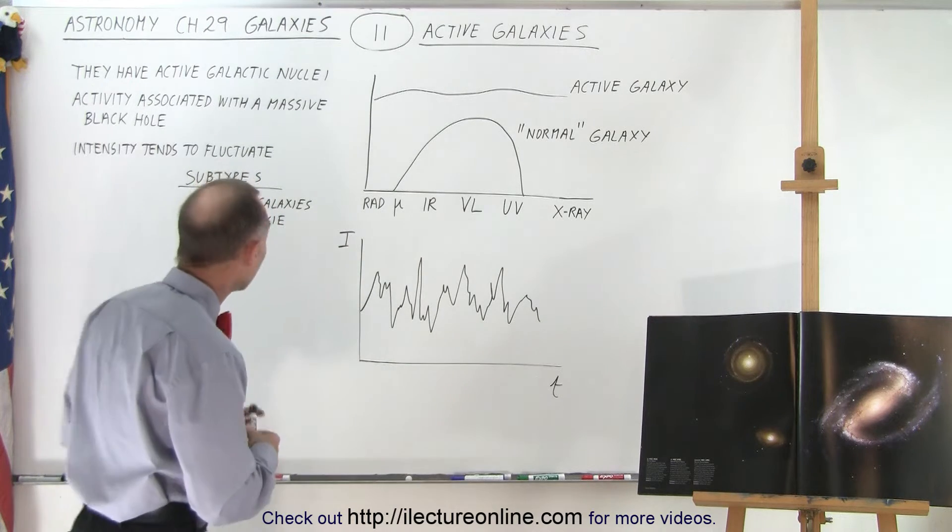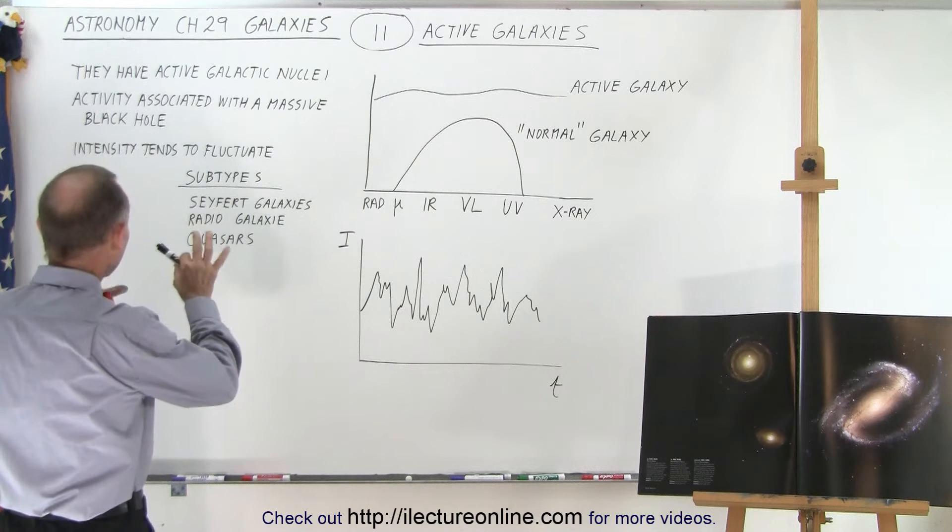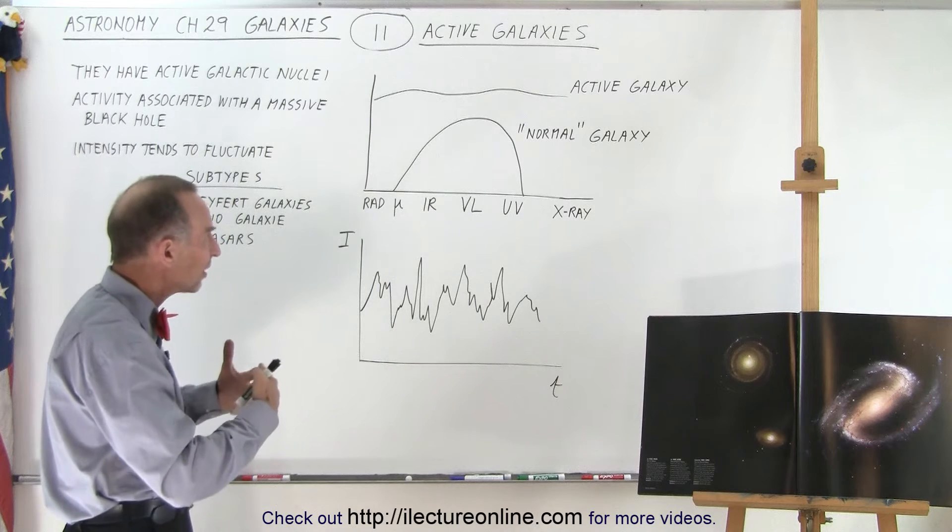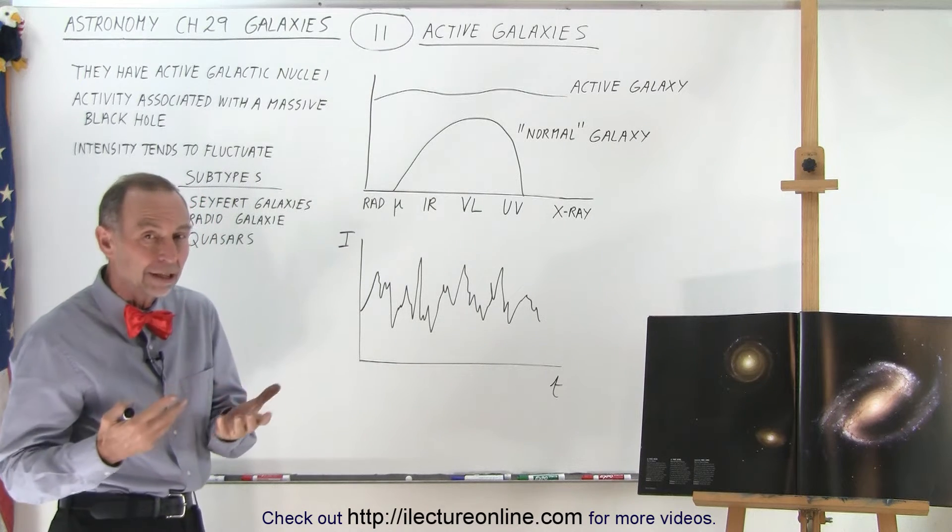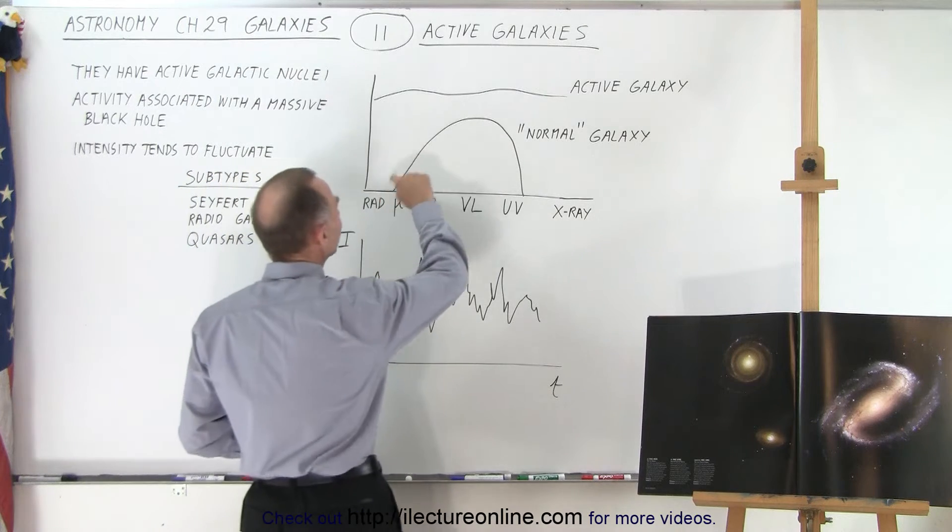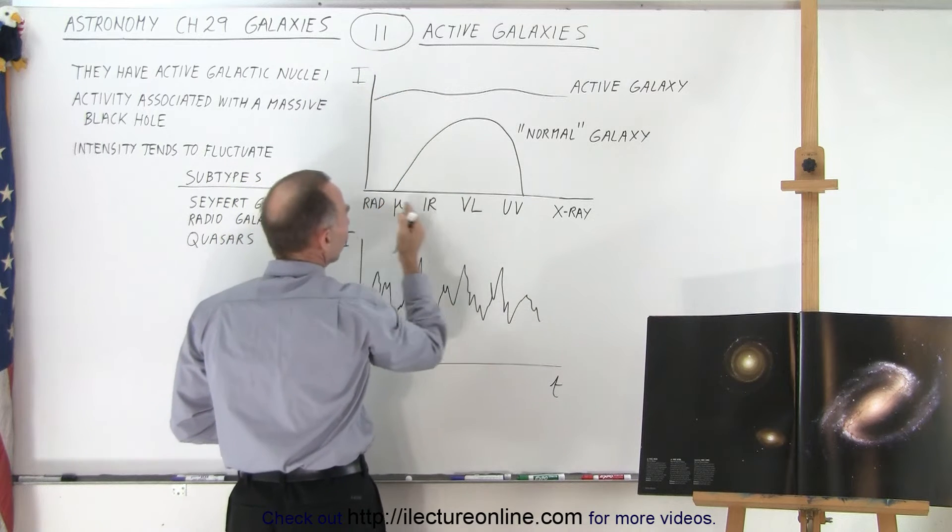Now let's take a look and see what we have up here. Typically what we call active galaxies are galaxies that have an active nucleus. Notice the difference in the radiation that we get from a galaxy.